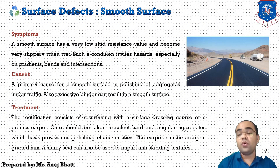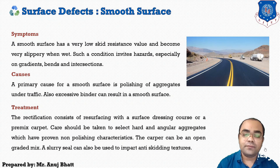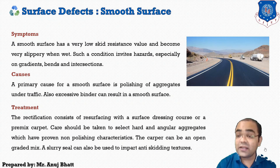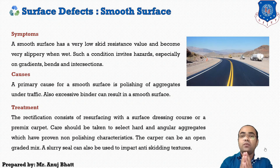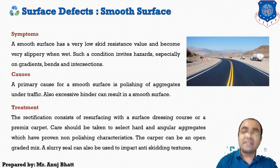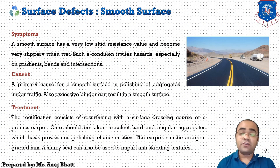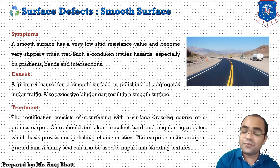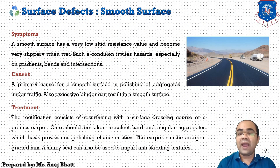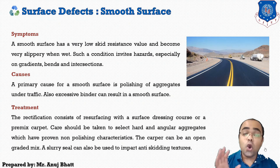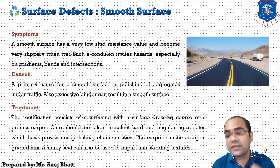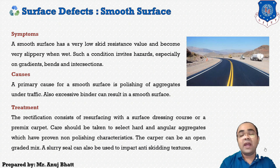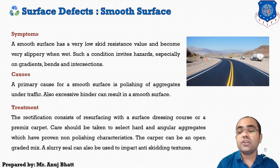For treatment, the rectification consists of resurfacing with a surface dressing course or a premix carpet. Care should be taken to select hard and angular aggregates which have proven non-polishing characteristics. Such aggregates will give skid-resistant properties to the pavement surface. The cover can be an open-graded mix, which will also absorb any excessive binder content. A slurry seal can also be used to impart an anti-skidding texture on the surface.